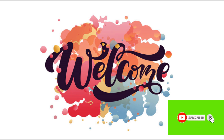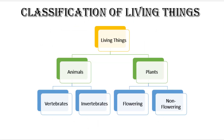Assalamu alaikum, welcome to our channel Easy and Amazing. Students, recall our previous lesson in which we discussed classification. Classification is the grouping of organisms on the basis of their similar characteristics. There are almost 8.7 million organisms present on Earth, and to study them, scientists have classified these organisms into groups.